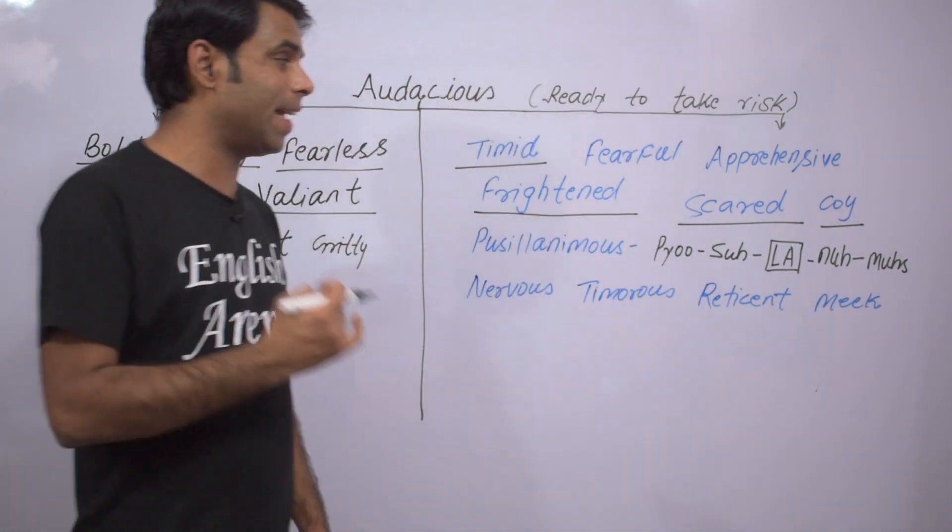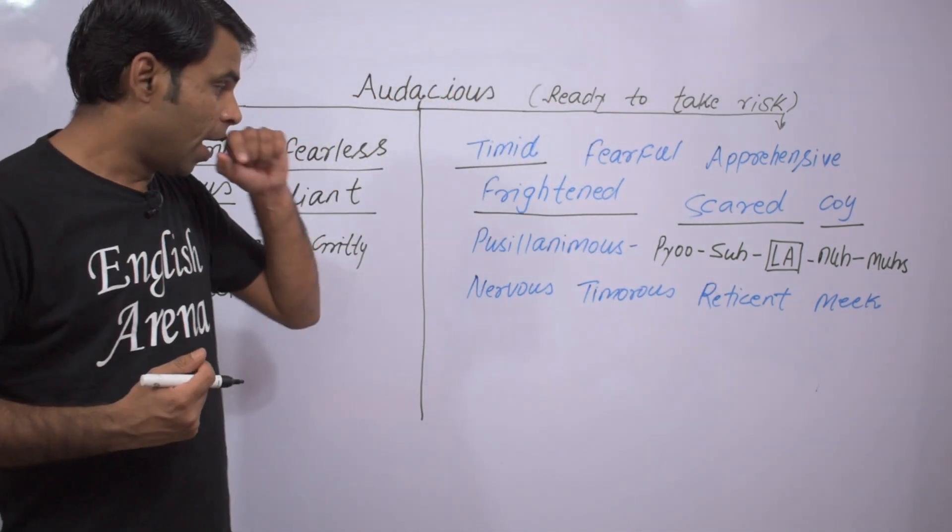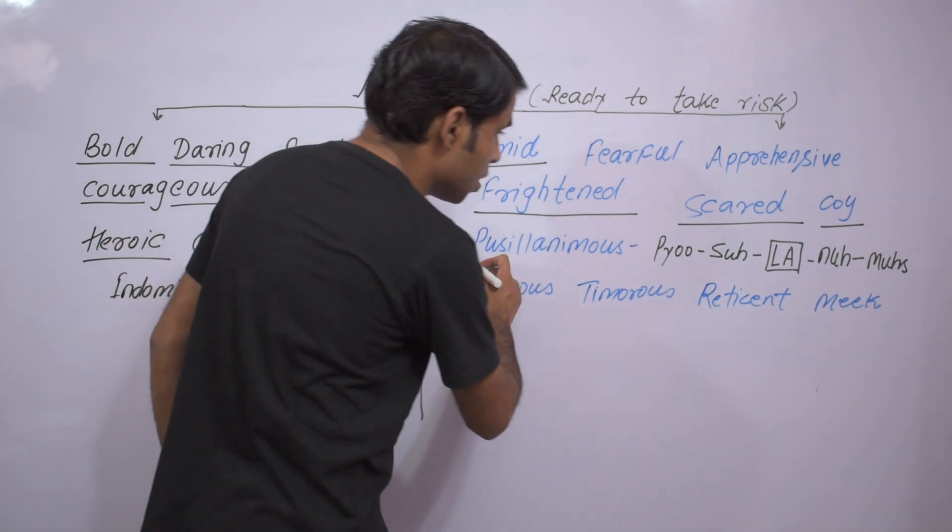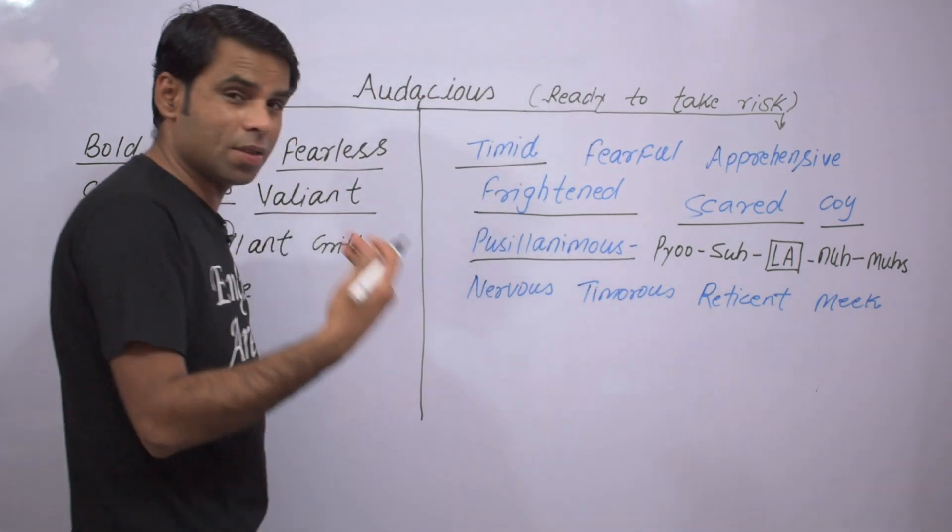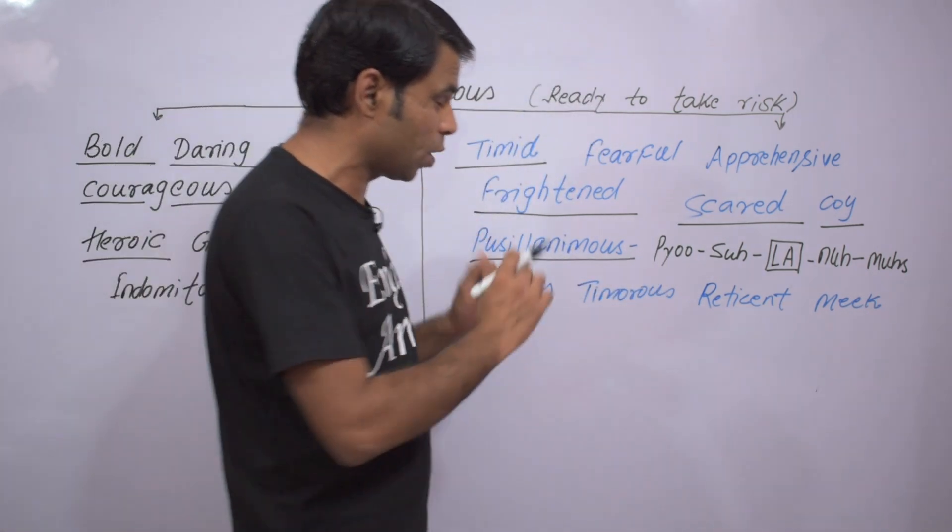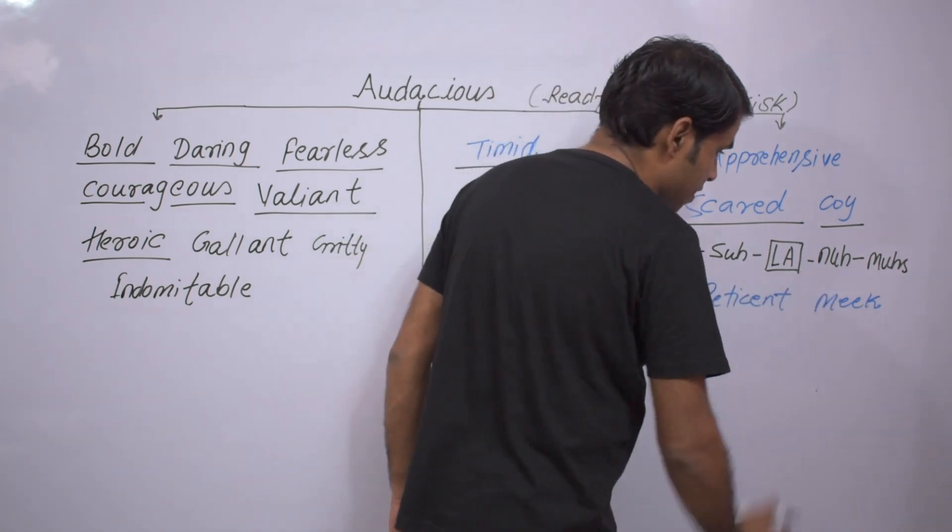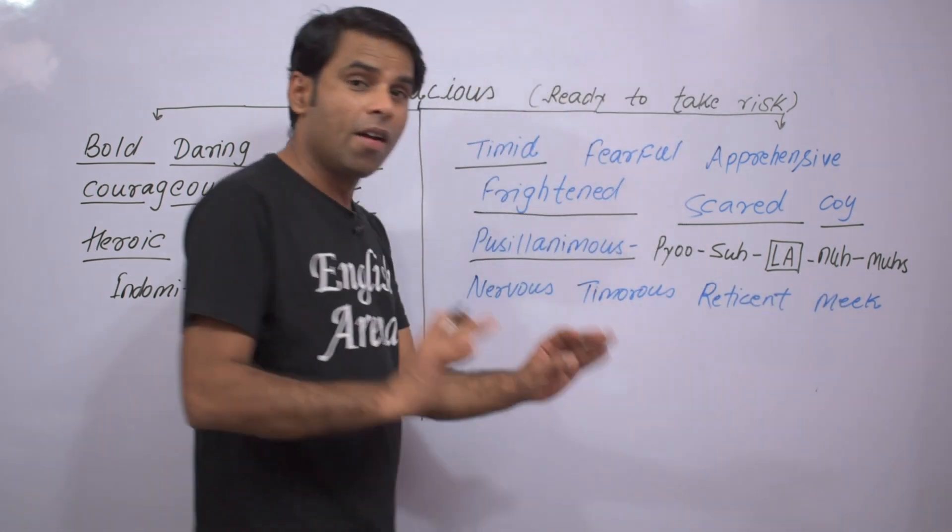And the next word is pusillanimous. It's a bit difficult to pronounce, so what I have done is I've written the pronunciation of this word as well. There are five syllables in this word.